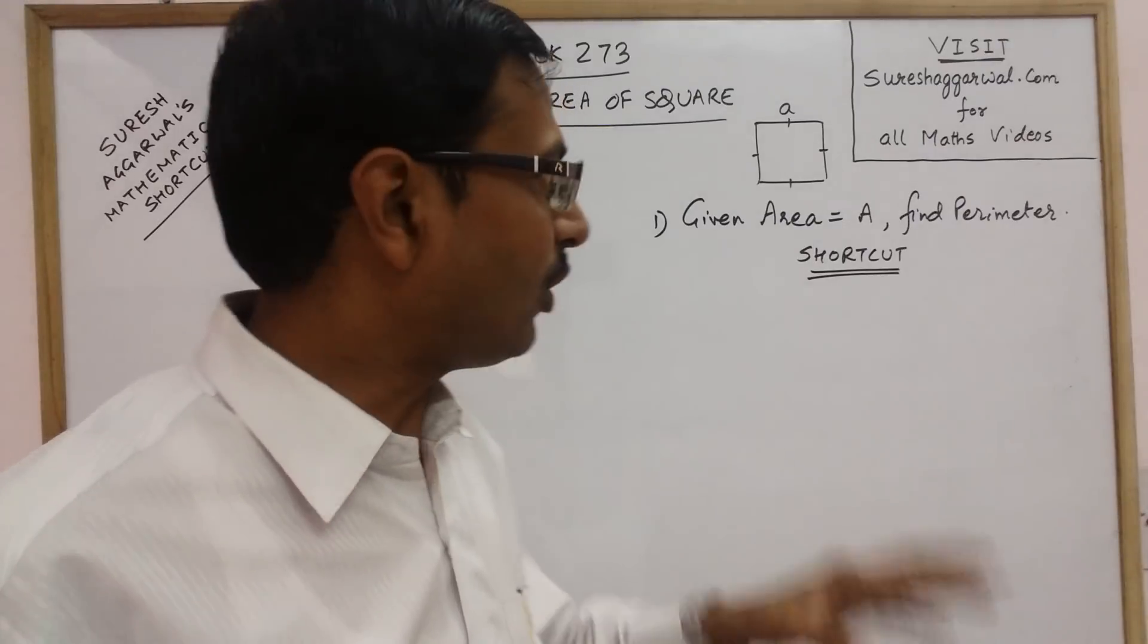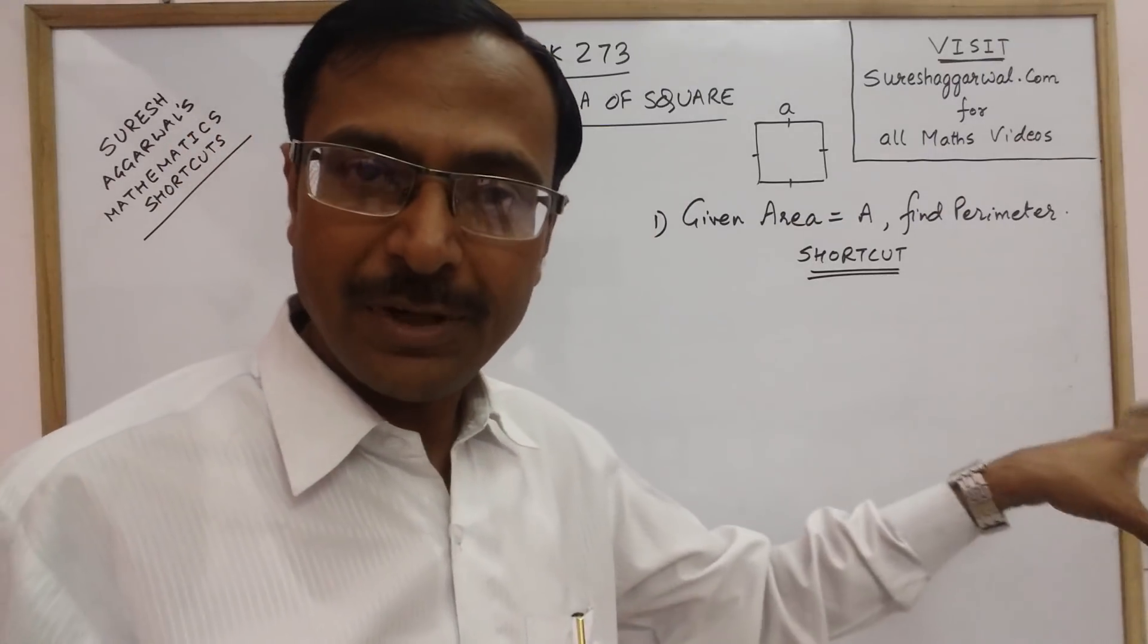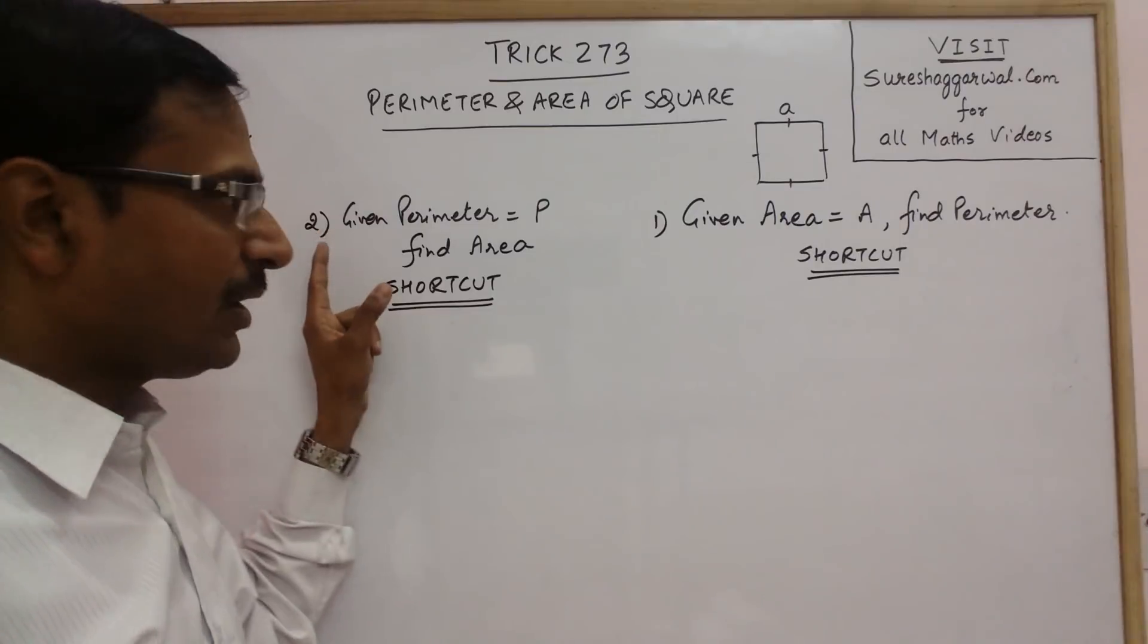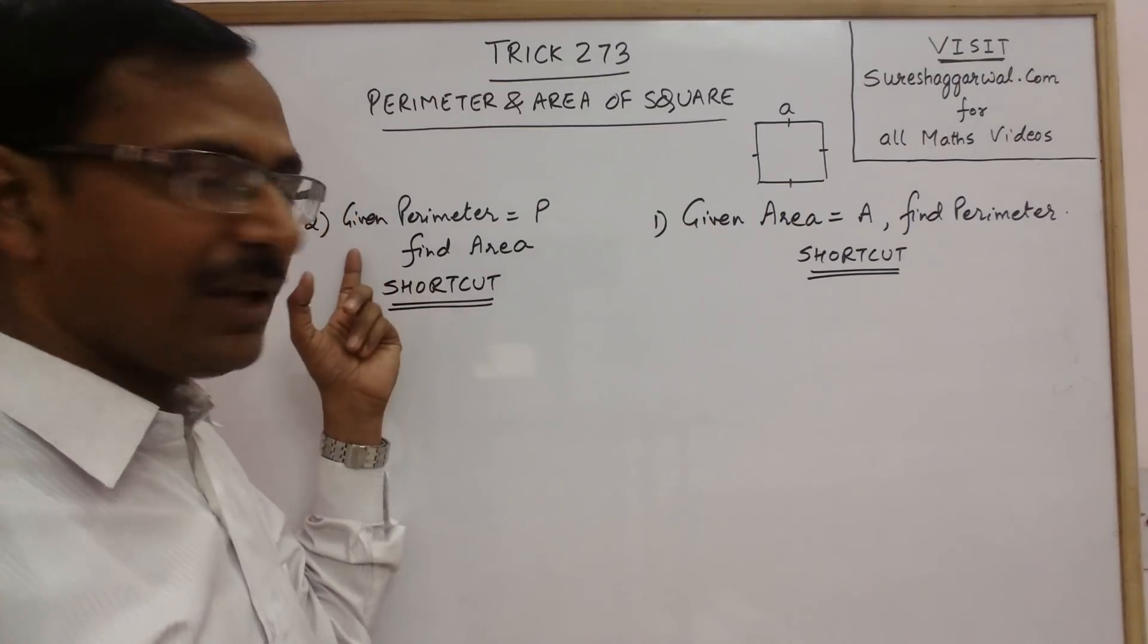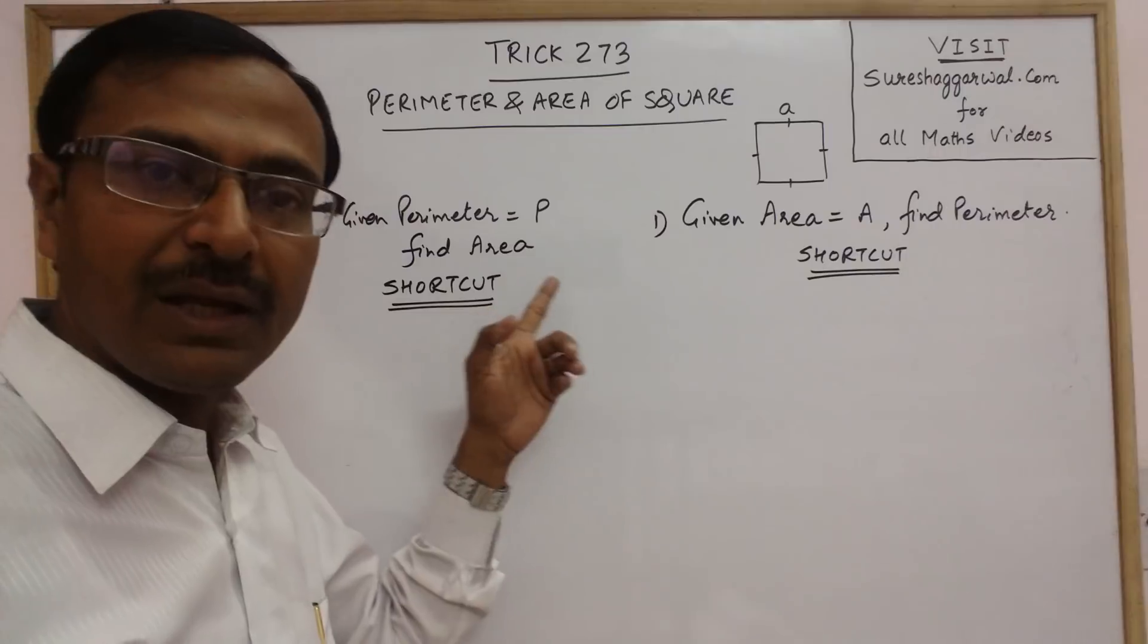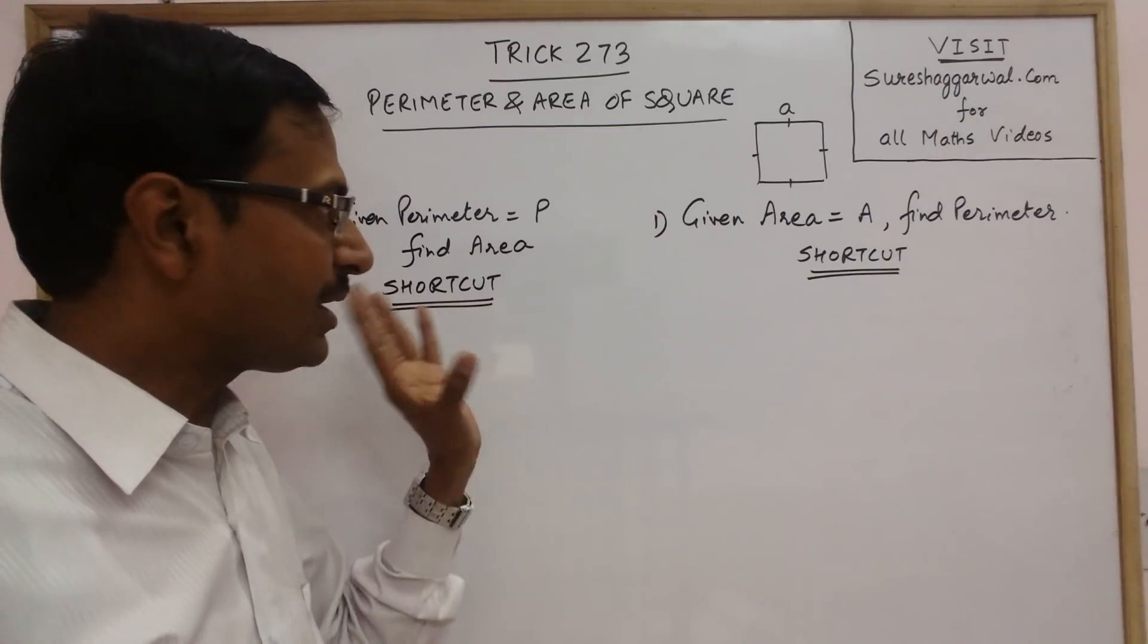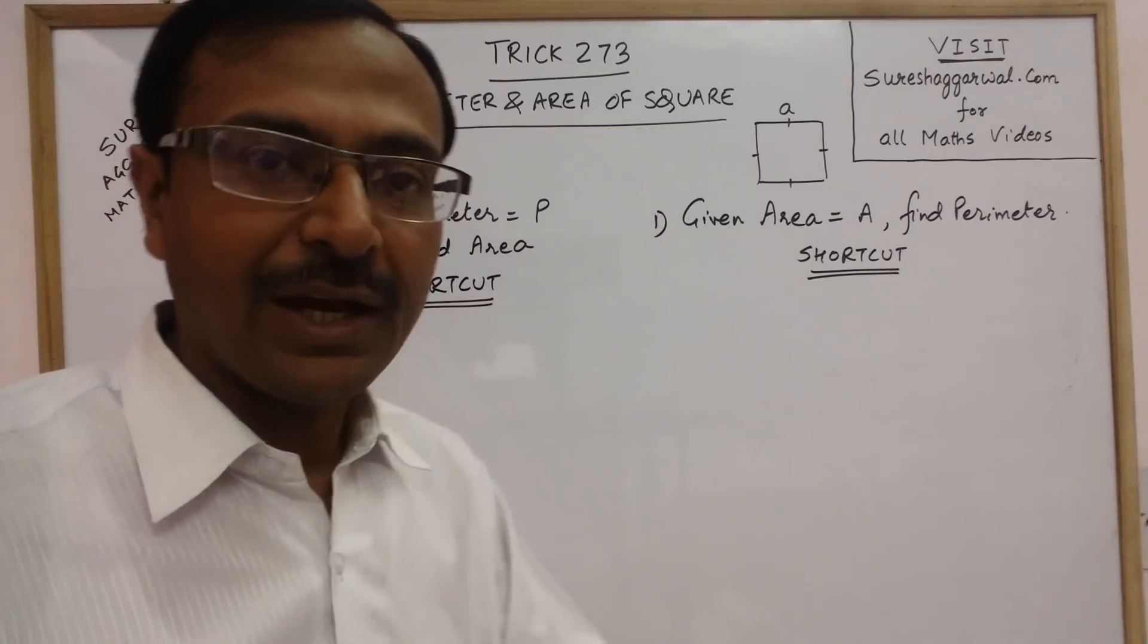And the reverse of this: if the perimeter P is given, then how do we find the area without using the concepts and formula of area and perimeter?